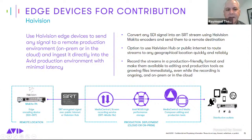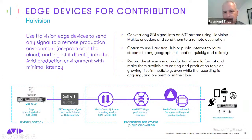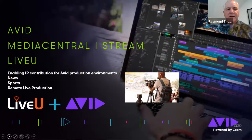Media Central Stream ingests the feed, puts it into an Avid-friendly format, and writes it to storage, making it available to Media Central and Media Composer systems downstream. Any SDI signal can be converted into an SRT stream on the Makito side, which is then sent over the internet and recorded.